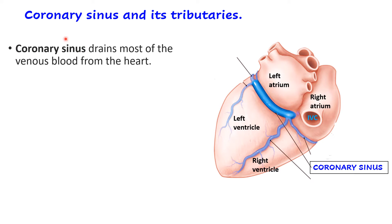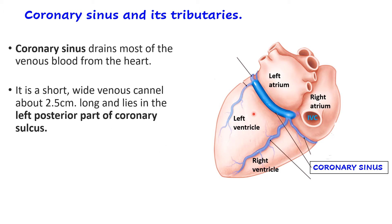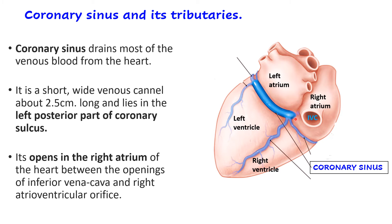The coronary sinus is the main venous channel which drains most of the venous blood from the heart. It is a short and wide venous channel, approximately one inch or 2.5 centimeters in length. It lies in the left posterior part of the coronary sulcus. It opens into the right atrium, specifically between the opening of the inferior vena cava and the right atrioventricular orifice.